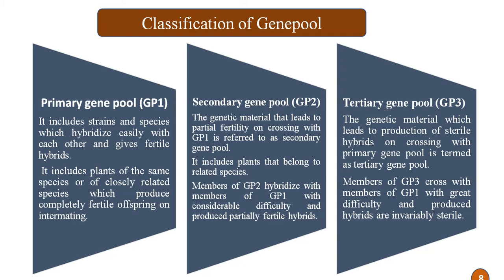The tertiary gene pool is the genetic material which leads to production of sterile hybrids on crossing with the primary gene pool. Members of GP3 cross with members of GP1 with great difficulty and produce hybrids which are invariably sterile. To tackle this problem, a specific breeding program must be designed to cross the tertiary gene pool with the primary gene pool to overcome the problem of invariably sterile hybrids.